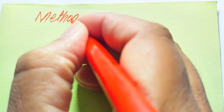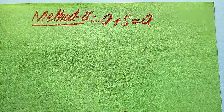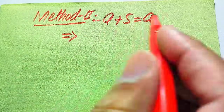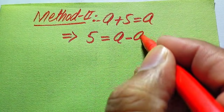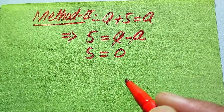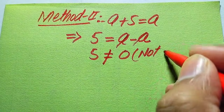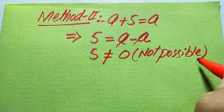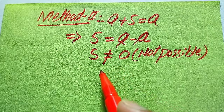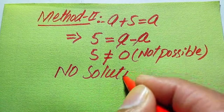Now we solve this problem using the second method, which is the quickest. We copy down the equation: √(a + 5) = a. Moving a to the right-hand side gives √(a + 5) − a = 0, but more directly, if we consider the original equation, moving a to the right side: 5 = a − a, and these cancel, giving 5 = 0. Since 5 = 0 is not possible, we cannot find any value of a satisfying the equation. This equation has no solution in general.